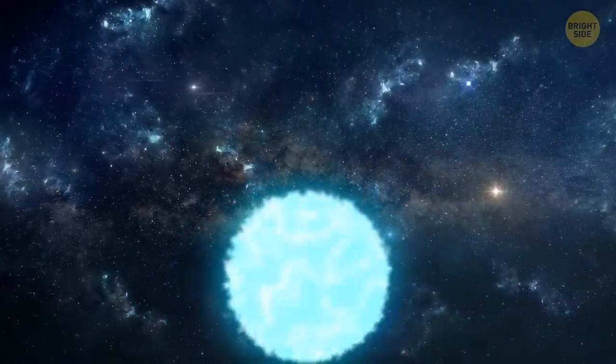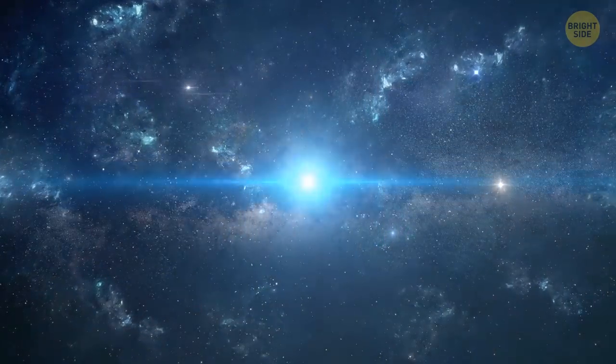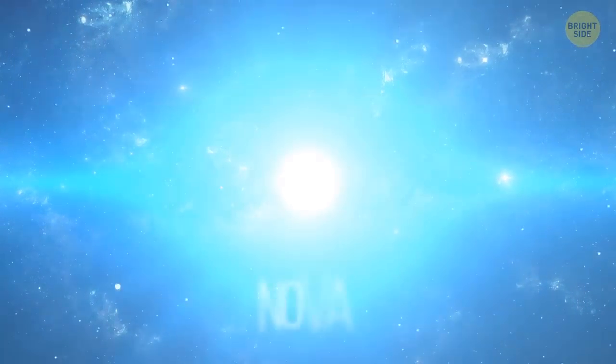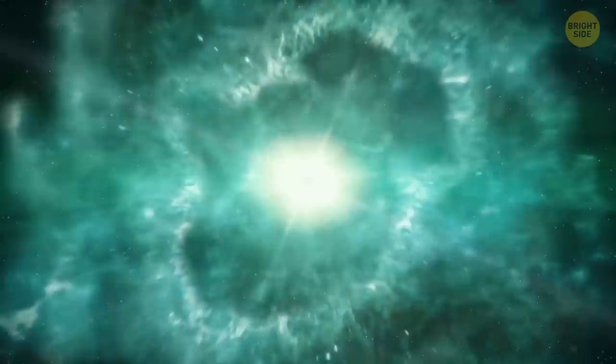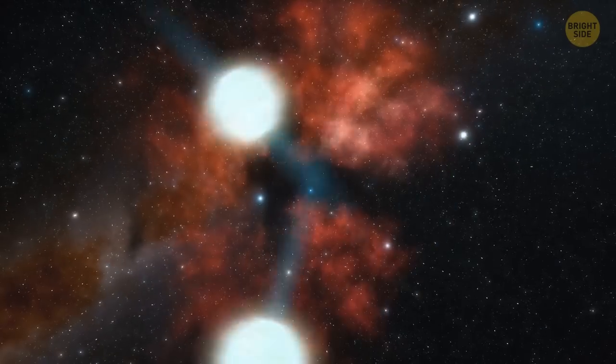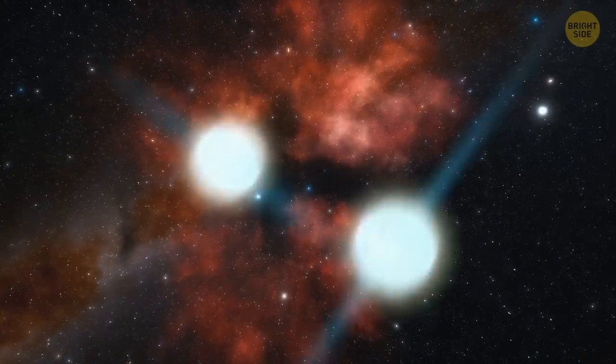It usually takes a white dwarf over a billion years to cool down. Under certain conditions, such a star can erupt. And this event is called a nova. It's way less bright than a supernova, or even a kilonova, which occurs when two neutron stars, or a neutron star and a black hole, merge into each other.